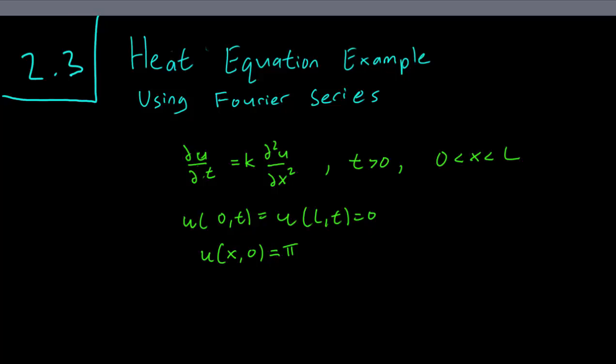So we have a heat equation on a rod of length L with the boundary conditions set at zero. This time we have an initial condition that is a constant pi. Remember the last example we had, the initial condition was just a sum of sines and now ours isn't. So we can see how we can use the Fourier series here to solve that problem.